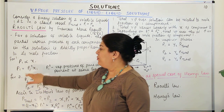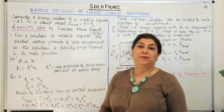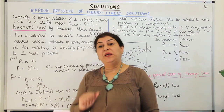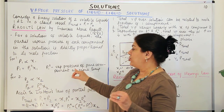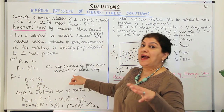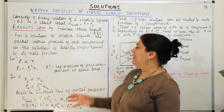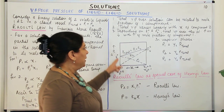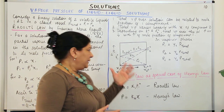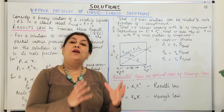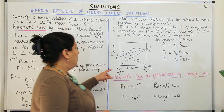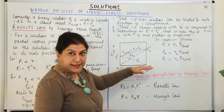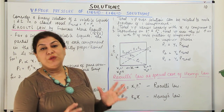So P1 is directly proportional to X1, meaning P1 = P1⁰ × X1. Here, unlike Henry's constant KH, the constant is P1⁰ — the vapor pressure of that pure component at the same temperature if it were present alone. I would not like you to focus on this graph before I start explaining it. This graph plots vapor pressure against the mole fraction of a mixture of two volatile liquids. Along the X-axis are mole fractions, and along the Y-axis are vapor pressures.